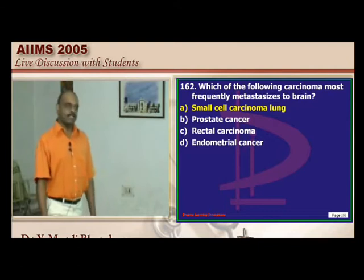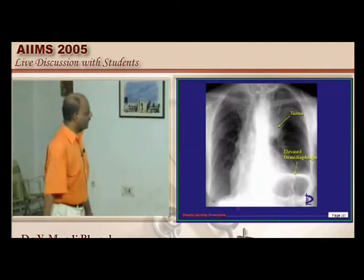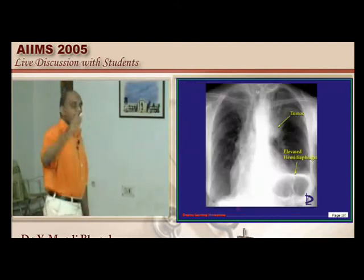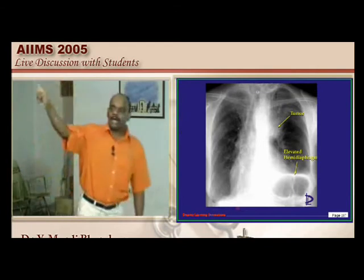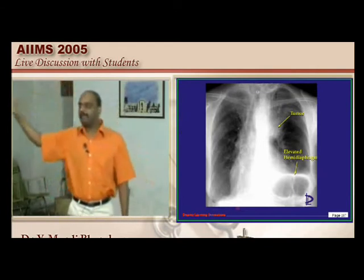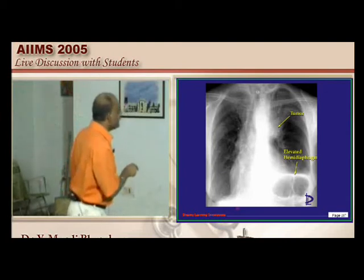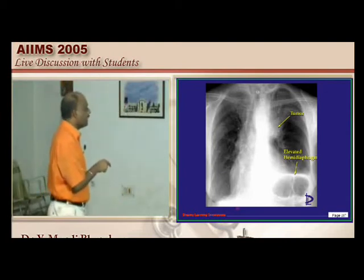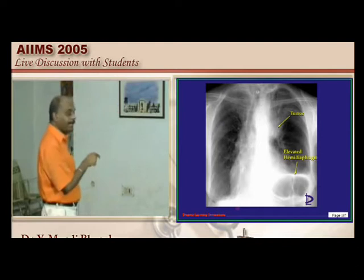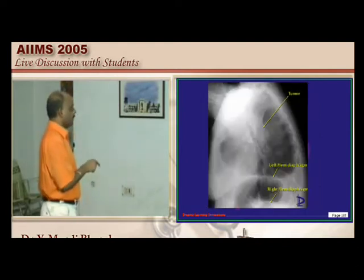Small cell carcinoma is the golden rule you should not forget — it most frequently metastasizes to the brain. Small cell and squamous cell are central; adenocarcinoma is peripheral. Small cell carcinoma can cause phrenic nerve palsy, leading to elevation of the diaphragm, as seen in this classical appearance.